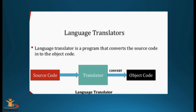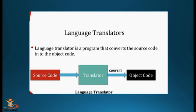The question arises: can a single translator convert every source code into object code? The answer is no. For different languages we need different translators. For example, C language needs a different translator than C++. Each and every language needs a translator — the job of the translator is simply to convert it into object code, which is compatible with the different platforms.